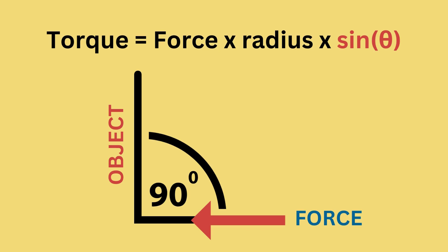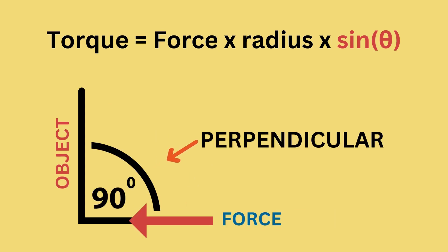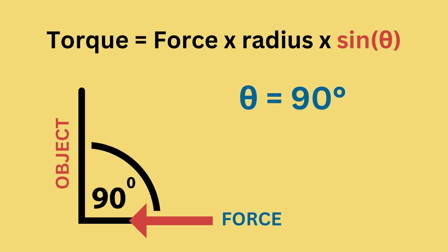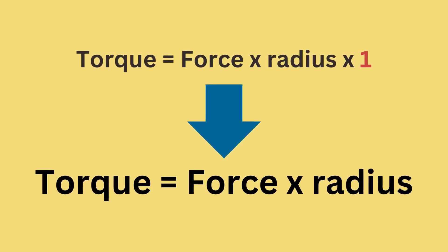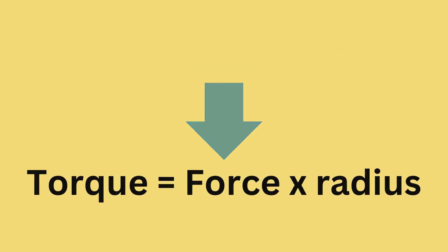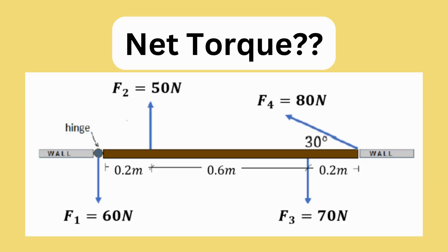But since applied force is usually perpendicular to the object, theta is usually equal to 90 degrees. Thus, because sine 90 degrees equals 1, it is normally excluded in the formula and is simply written as torque equals force times radius. Going back to the problem, let us answer letter A and find the net torque acting on the door.